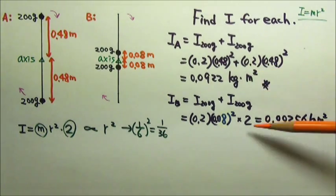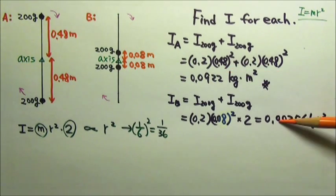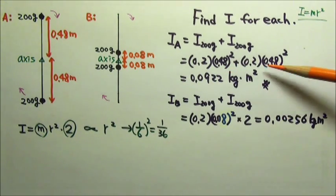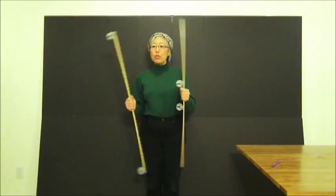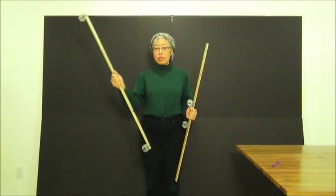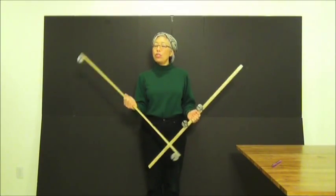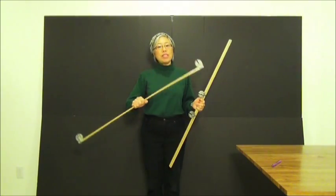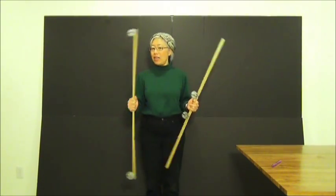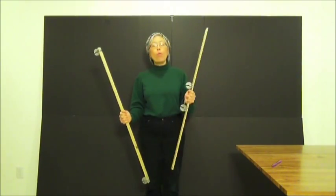So the ratio of I is 1 to 1 over 36 or 36 to 1. When I rotate them in such a way, yes, this one does feel much heavier, but not really as much as 36 times heavier than that one. Why not?